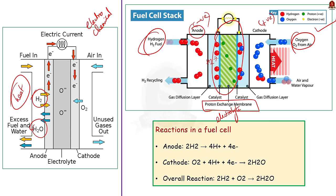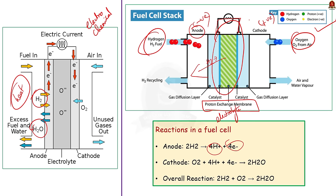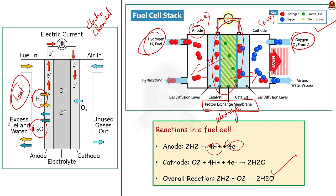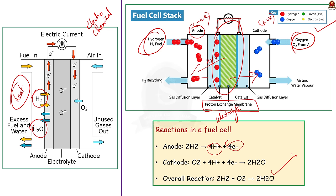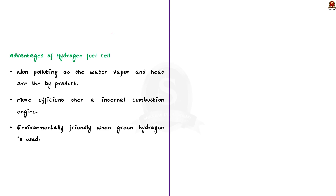As the protons are positively charged, they move through the proton exchange membrane. The protons move through the electrolyte to the cathode. The electrons that are generated in the anode region flow through an electrical circuit, generating electrical energy. At the cathode, oxygen combines with the protons and electrons to form water as the byproduct. The only byproducts of the electrochemical reaction in a hydrogen fuel cell are water vapor and heat. Hence, they produce zero emission of harmful pollutants like carbon dioxide (CO₂), carbon monoxide (CO), particulate matter, or nitrogen oxides (NOx), which are typically associated with internal combustion engines.